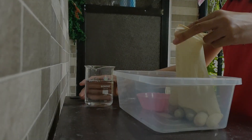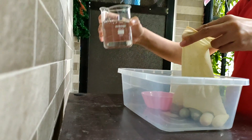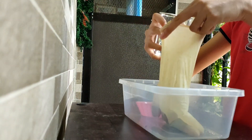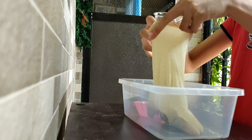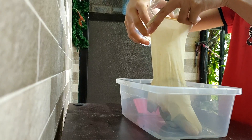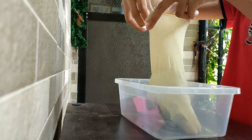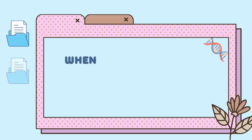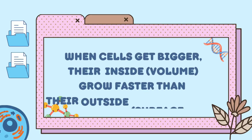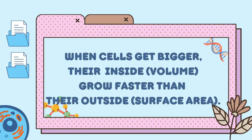Without the presence of water, the Orbeez balls cannot grow in size because there is nothing to absorb. This leads us to the conclusion that the cells inside, or the cytoplasm, grow faster than their outside, or the cell membrane.